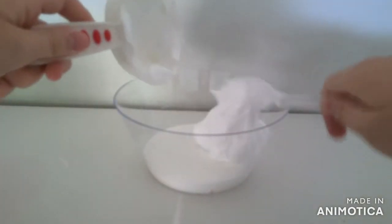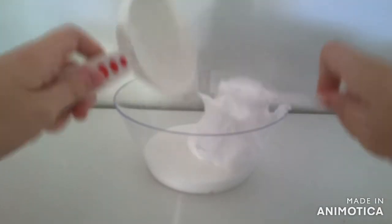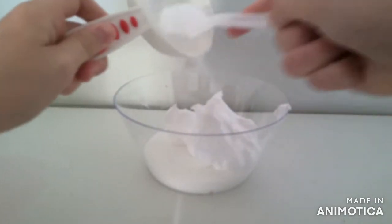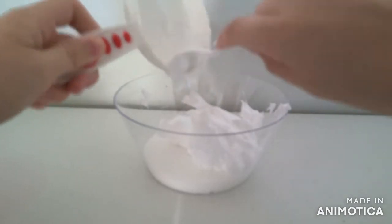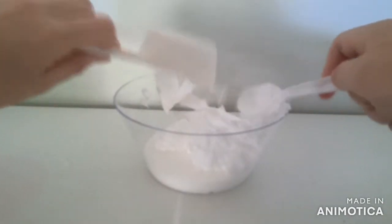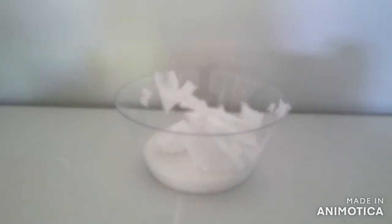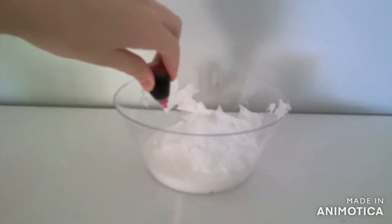To your glue, add about half a cup of shaving cream. It's okay if it's a little bit more because shaving cream does tend to puff up when you spray it out of the bottle.